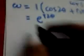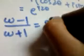And we have to show that w minus 1 over w plus 1 equals i tan theta. Let's begin. Left hand side: w is e^(2i theta), so this becomes e^(2i theta) minus 1 over e^(2i theta) plus 1.